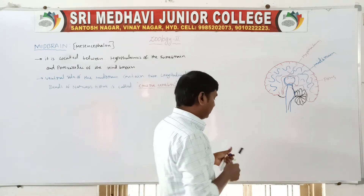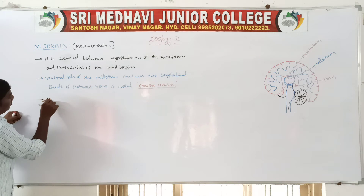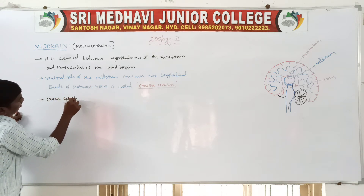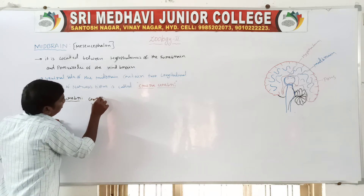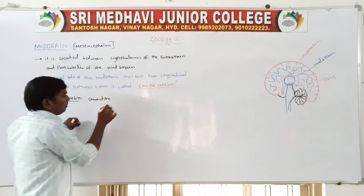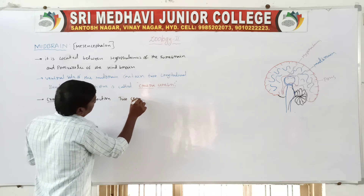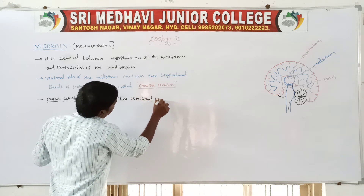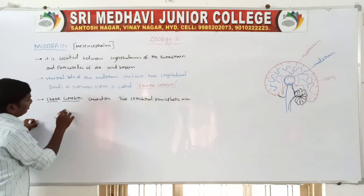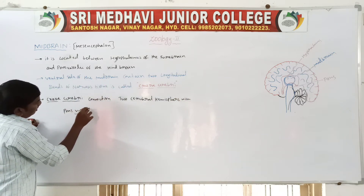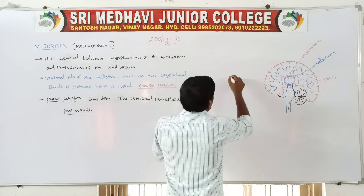The function of the crura cerebri is the connection between the two cerebral hemispheres with pons varolii. So they are the midbrain ventral side — see the diagram.